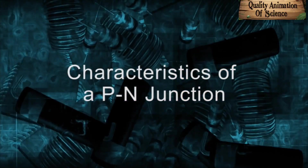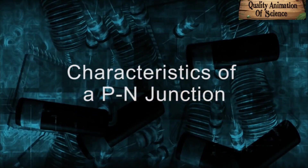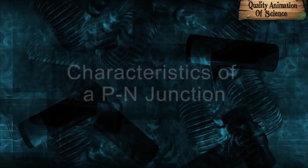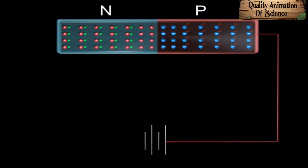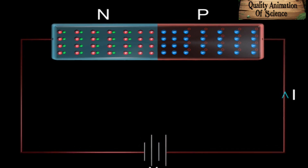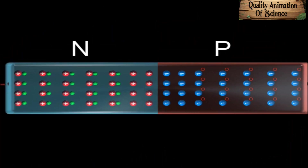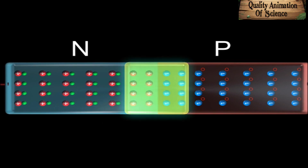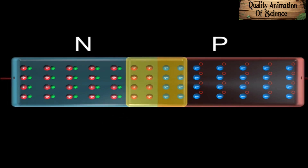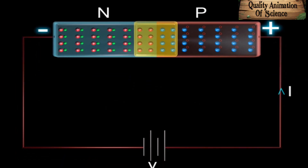Characteristics of a P-N junction. Let us connect the P-side of the junction to the positive terminal of a battery and the N-side to its negative terminal. Connected in this way, the potential difference across the depletion layer is in a direction opposite to the applied voltage. Hence, the width of the depletion layer reduces.